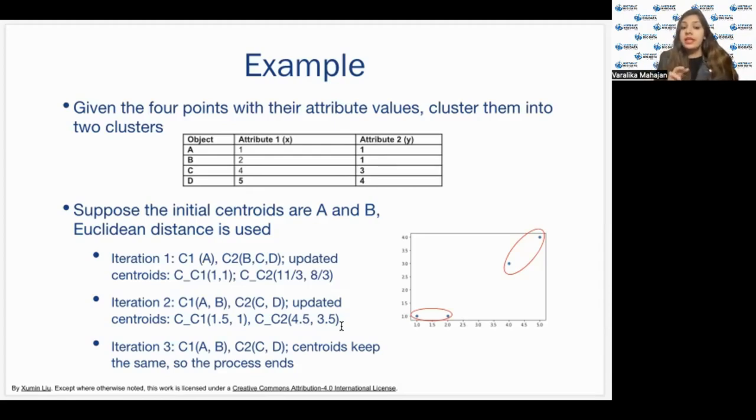However, in the third iteration, the centroids do not update. A and B still fall in the first cluster and C and D still fall in the second cluster. This means our process ends over here and we have achieved a final clustering which is highly cohesive and very well separated as you can see in the figure itself.